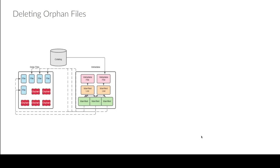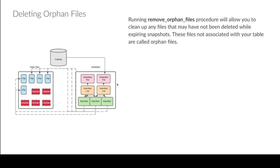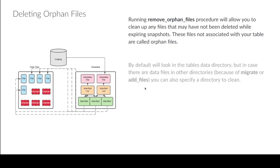There's also deleting orphan files. Sometimes jobs are unsuccessful and you end up with unused files that build up from incomplete writes or transactions that didn't succeed — files not associated with any snapshot. They weren't deleted during the expired snapshot process. The procedure looks in the data files folder, goes through all active snapshots to build a list of every valid file, then goes through the folder and deletes any file not on that list. This can take a while, so it's not something you'll do super often, but you may want to do it once in a while.